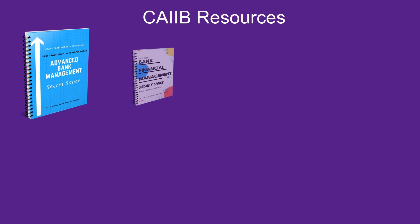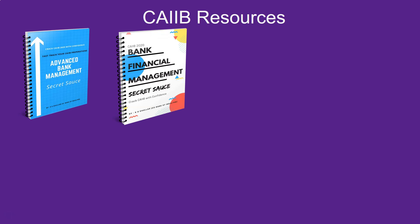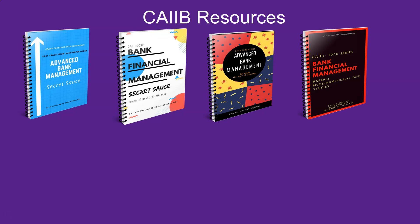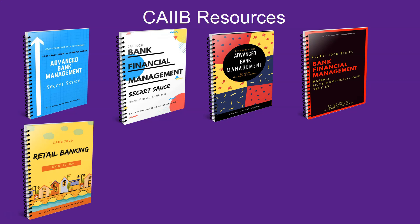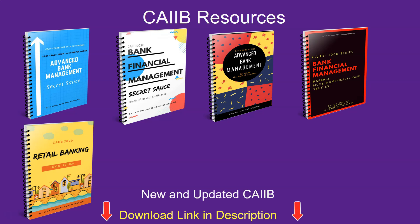Before moving ahead, don't forget to get your CIB master's pack, which is a pack of 4 books. The first two are secret sauce books — summarized notes — and the last two are question banks of ABM and BFM respectively. You can also get individual books as per your needs. All links are in the description. You can also get the Retail Banking 1000 series, which contains chapter-wise questions and detailed case studies. Always get updated editions since these question banks are updated after every 6 months, i.e., after exams.